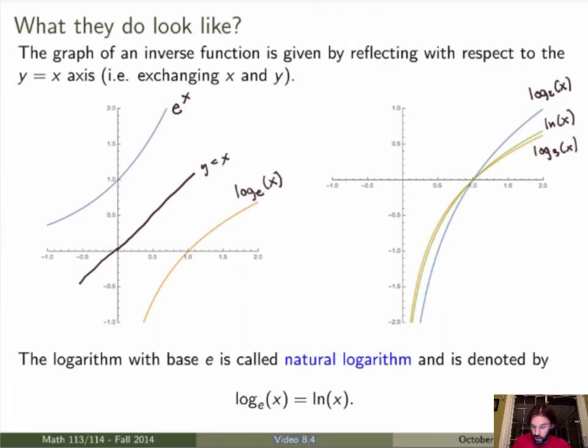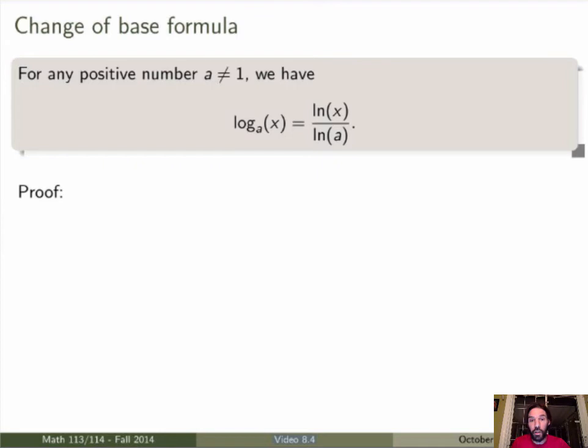So these are what the logarithmic functions are. Now there's a very important property for logarithmic functions which is called the change of base formula. So what is this? The statement is that for any choice of base which is not equal to 1, the logarithm of x in the base a is the same as taking first the natural logarithm of x and dividing by the natural logarithm of the base a. So why is that true? Well let me prove that.